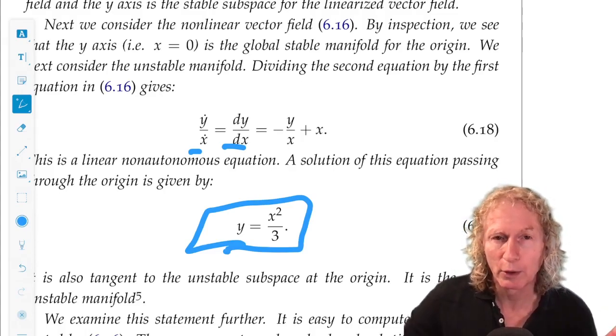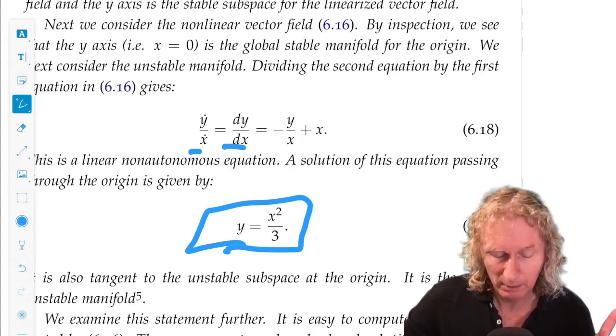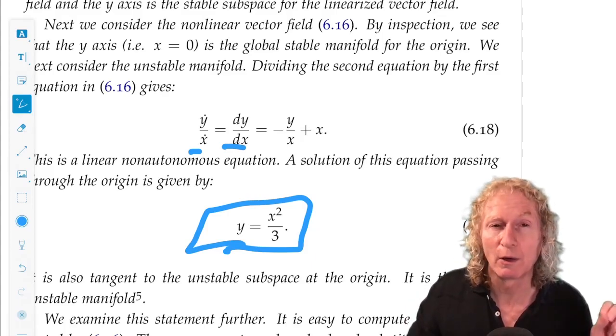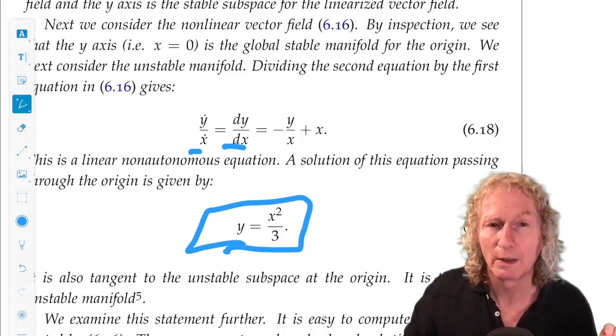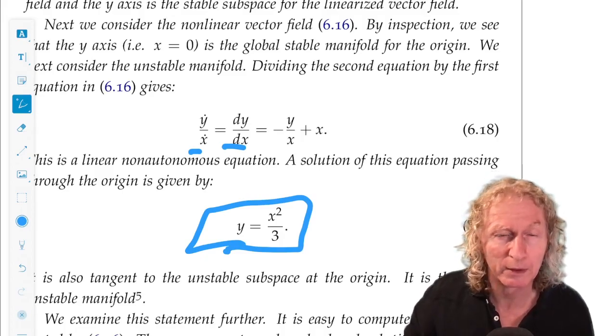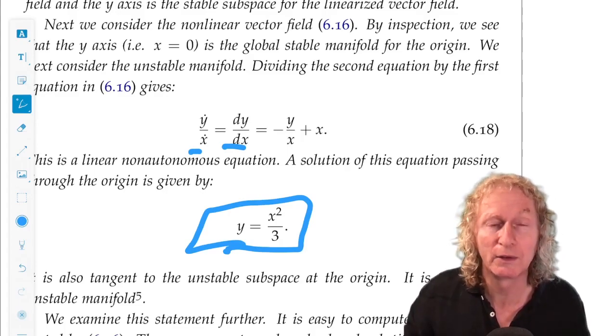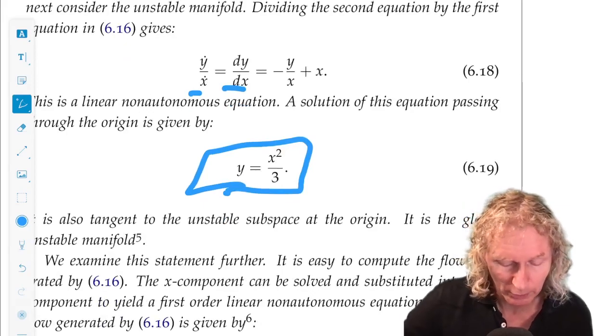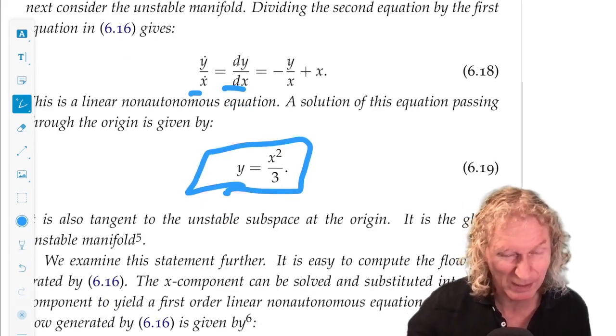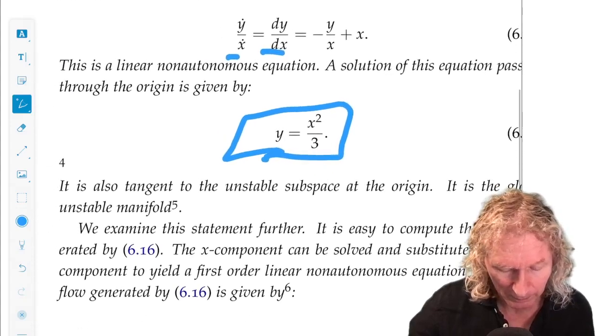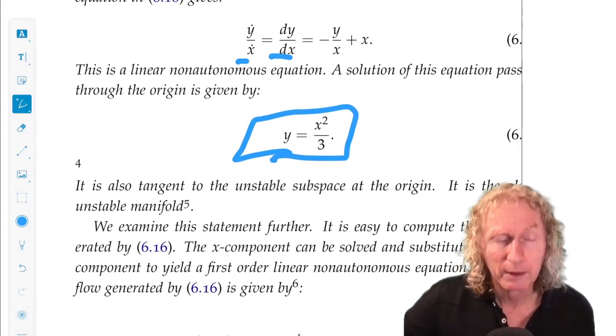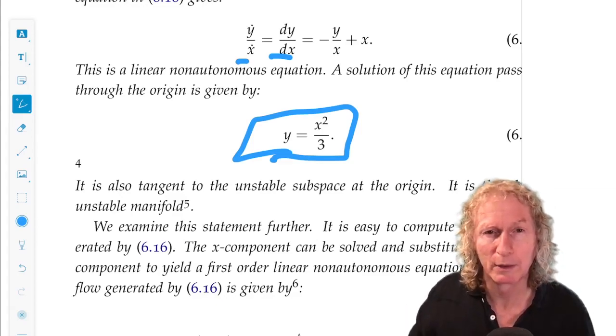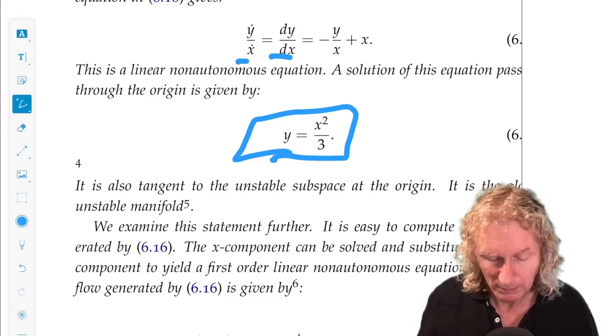Okay. It's also, it passes through the origin. Remember the three requirements for the unstable manifold, it's also tangent to the unstable subspace at the origin, the x-axis. dy/dx is zero at x equals zero. It's the only trajectory that passes the origin. That's not immediately obvious. And it's unique is the unstable manifold. So, this is the global unstable manifold of the origin.